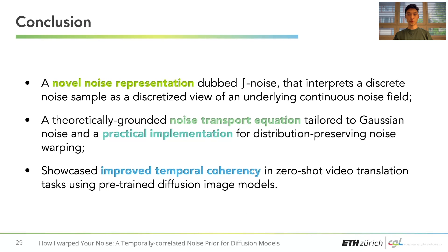So in summary, we propose a theoretically grounded and practical method to warp a Gaussian noise while preserving its properties, and showcase improved temporal coherency when using it to repurpose image diffusion models for video translation tasks.